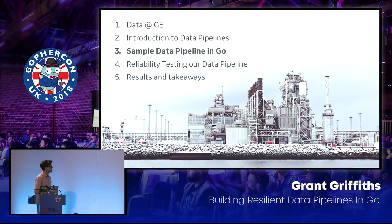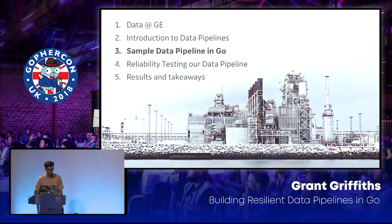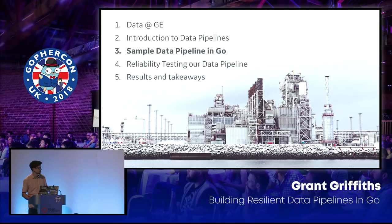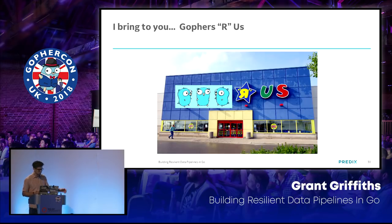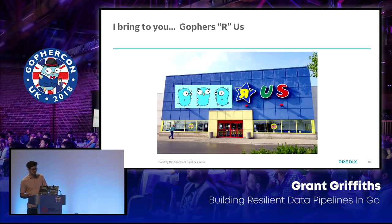Now we're going to talk about a sample data pipeline written in Go. We're going to go over a simple example that is very similar to the production code we're using at GE to parse all those data points. By show of hands, who likes the Go gopher? I bring to you: Gophers R Us — a store where you can buy any type of Go gopher swag, T-shirts, anything you want. We're going to build a data pipeline for Gophers R Us.